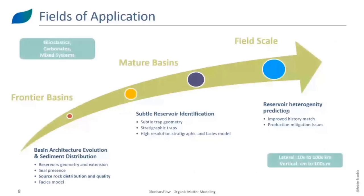The fields of application of this methodology vary from frontier basins all the way to field scale. With that variation in scale, the objectives also change. At frontier and basin scale, objectives would be delineation of reservoir, seal, and source rock distribution and quality. In mature basins, it becomes subtle stratigraphic traps, and at field scale it would be improved history matching. For the source rock tool, the application is more at basin scale within Dionysus Flow.